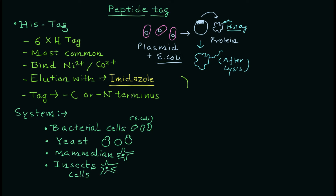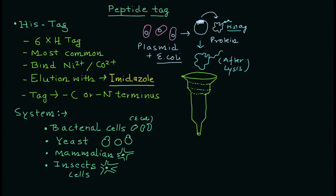After cell lysis of the bacterial cells, you will have a mixture of protein molecules. Some will be recombinant proteins with the histidine tag; others will not have that tail. You can exploit this by binding the His-tagged protein to the nickel slurry. When you flow the mixture through this column — shown here in green — only the protein with the histidine tag will bind to the slurry; all other proteins will flow through.